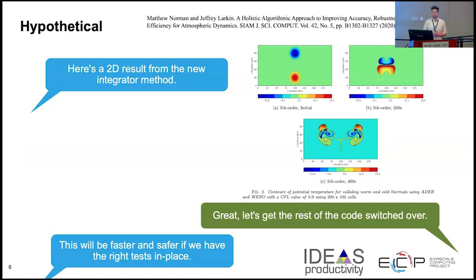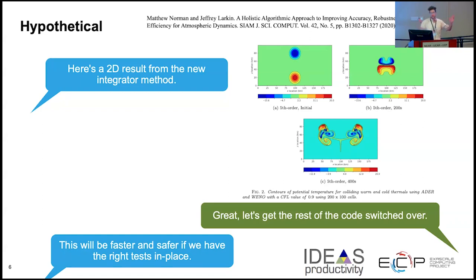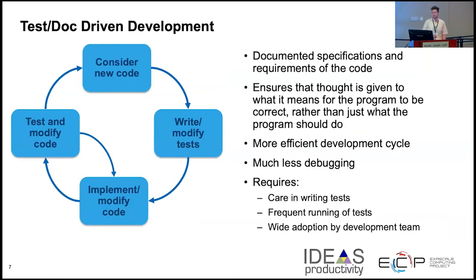Going back to our example: here's a 2D result from the new integrator method. You have a hot front meeting a cold front moving forward in time. You get some nice structure preservation and conservation properties and everything looks good. Let's get the code switched over. This will be easier, faster, and safer if we have the right tests in the right place. Just getting the numerical result is not the end of the process — you've got to take that numerical result and turn it into something that's a reproducible workflow that fits into what you're actually doing.